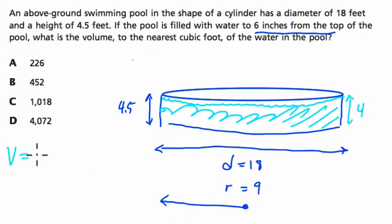So volume equals π r² h because it's the area of a circle times the height. Volume equals π times 81—9 times 9 is 81—times the height, 4.